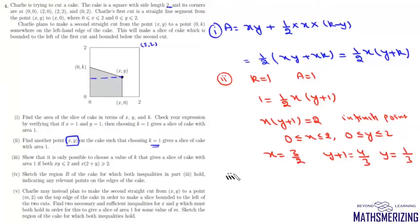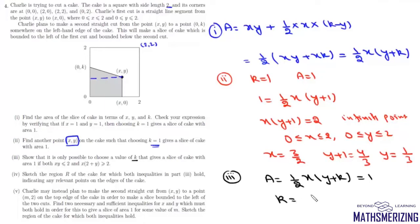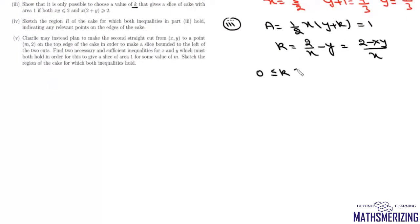For part three, show that it is only possible to choose k giving area 1 if both xy ≤ 2 and x(2 + y) ≥ 2. We know the area is (1/2)x(y + k). Setting this equal to 1 and solving for k gives k = (2 − xy)/x, or equivalently 2/x − y. Since k must lie between 0 and 2, we write 0 ≤ (2 − xy)/x ≤ 2.